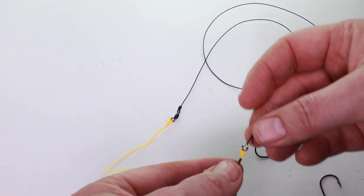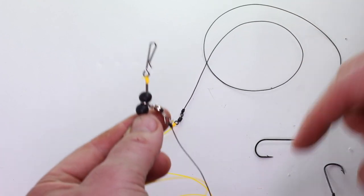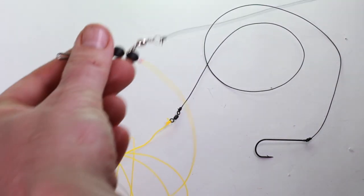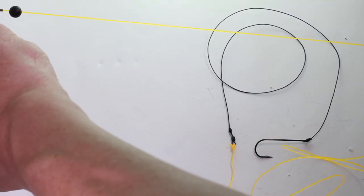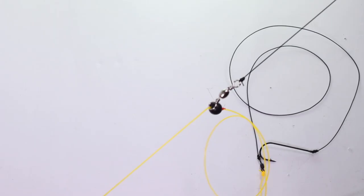That's going to be attached to your main line, and that fish will be able to take that part of the bait and pull it all the way down with that power gum being able to move down the line there.